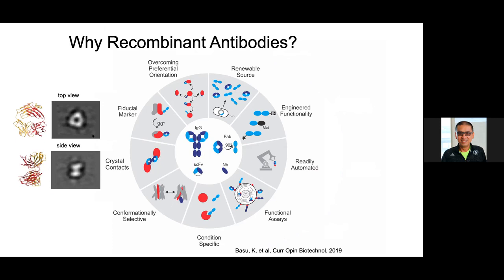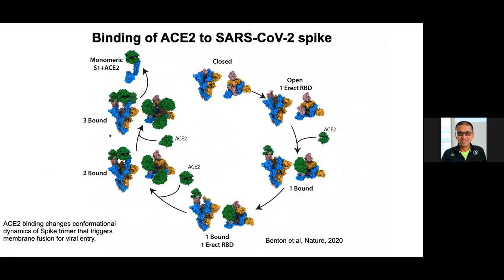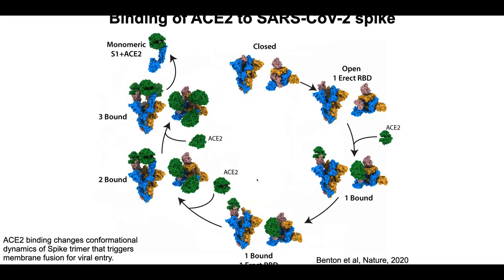These antibodies serve as unique fiducial markers and as important tools to trap particular conformational states. Applying that to SARS-CoV-2, as shown in work from Steve Gamblin's group, the pathway of infection and how ACE2 drives changes in the conformational landscape can be mapped. Starting at 12 o'clock on this mechanism, the trimeric spike protein is shown in its closed state. Once the three receptor binding domains engage ACE2, you get conformational changes as all three receptors load onto the spike surface, leading to eventual infection.